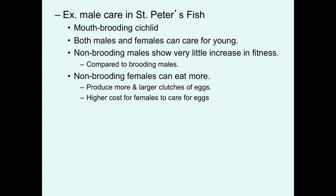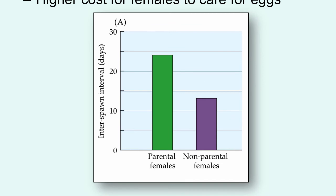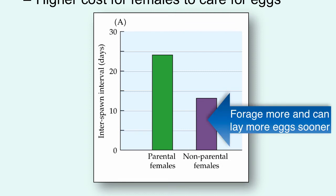An example of this is seen in St. Peter's fish, which are mouth-brooding cichlids. Both males and females can care for the young by incubating them in their mouths. This has very little impact on male fitness — non-brooding males show very little increase in fitness compared to brooding males. But non-brooding females can eat much more, allowing them to produce more and larger clutches in the future. So there's a higher cost for females to care for the eggs given the relatively low cost to males, and the males provide the care. The data on inter-spawn interval show a huge difference between parental and non-parental females; non-parental females can forage more and acquire resources to lay more eggs sooner.